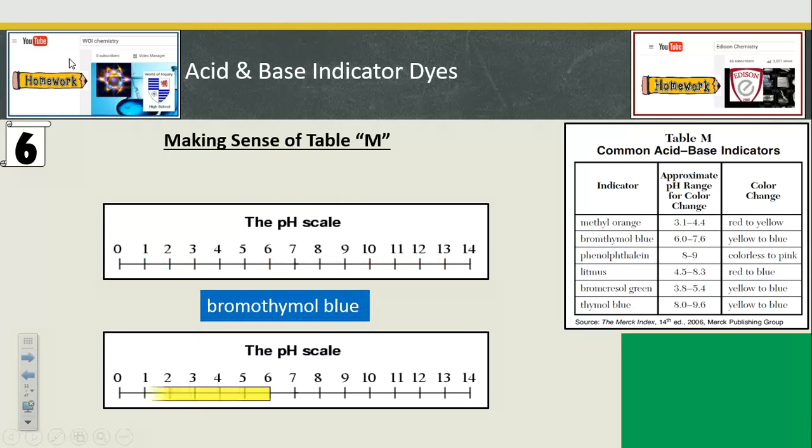Bromothymol blue. Below pH 6, it's going to be yellow. Above 7.6, it's going to be blue. And green right in the middle.